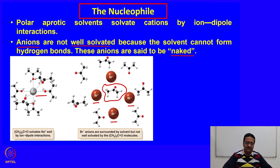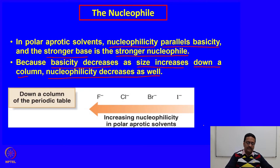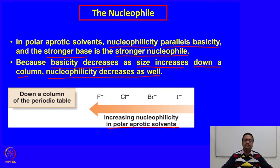In polar aprotic solvents, nucleophilicity parallels basicity and the stronger base is a stronger nucleophile. Because basicity decreases as size increases down a column, nucleophilicity decreases as well. So in the case of halogens — fluoride, chloride, bromide, and iodide — nucleophilicity increases from iodide to fluoride in polar aprotic solvents. These trends will be very necessary when we try to understand what happens in SN1 or SN2 reactions with these different types of nucleophiles.